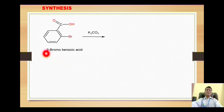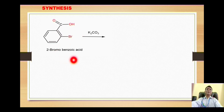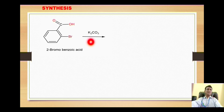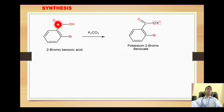The synthesis starts with 2-bromobenzoic acid as the starting material. This is benzoic acid where on position two we have a bromine. This 2-bromobenzoic acid reacts with potassium carbonate, and the acid gets converted into its potassium salt, that is potassium 2-bromobenzoate. This is a very important step.